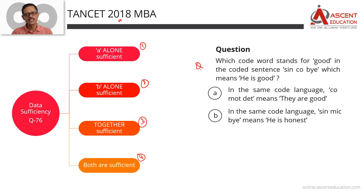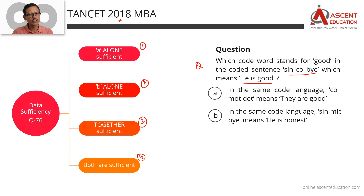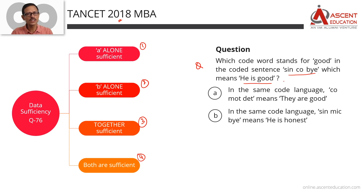Question No. 1: Which code word stands for 'good'? In the coded sentence, 'sin co buy' means 'he is good.' So 'he is good' is the sentence, and the code word is 'sin co buy.' We can identify that 'he' is sin, 'is' is co, and 'good' is buy — but that is what we need to find out. In the coded sentence 'sin co buy' meaning 'he is good,' which code word represents 'good'?